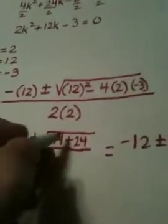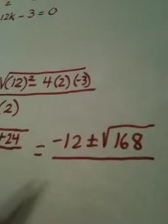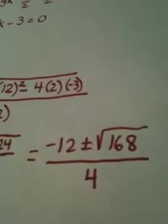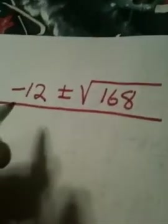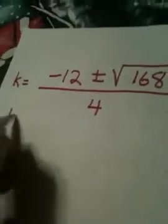Okay, so I end up getting a negative 12 plus or minus the square root of 144 plus 24 is 168. So, this is what we have so far, we have a negative 12 plus or minus the square root of 168 all divided by 4. This is my answer. This is what k equals. But, I can make this better.